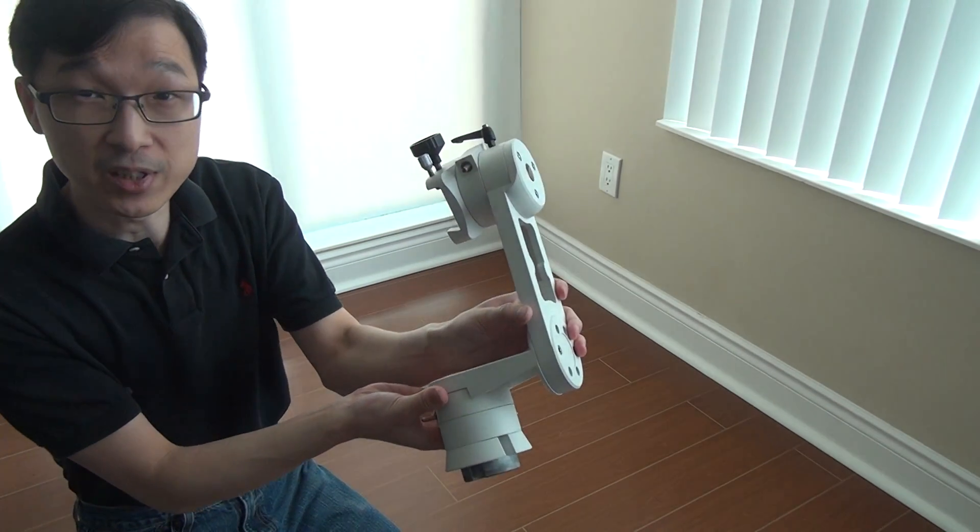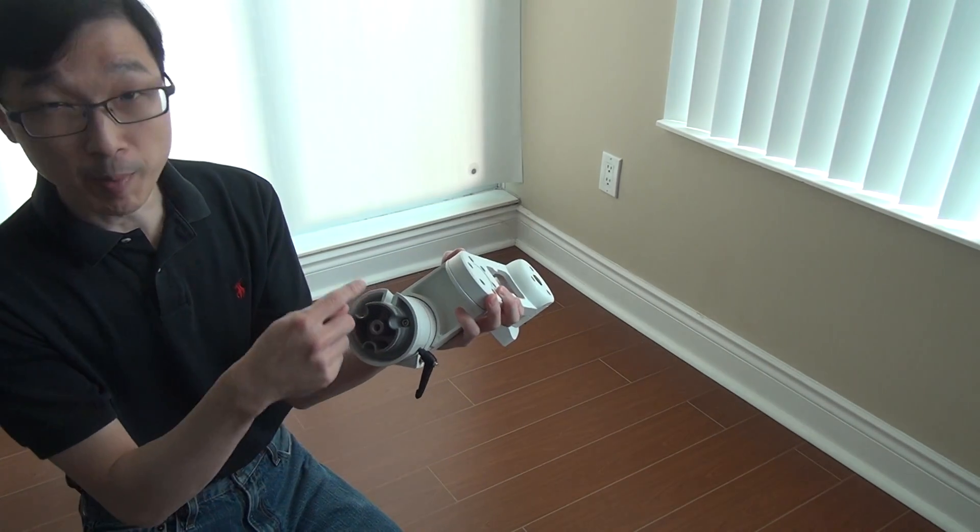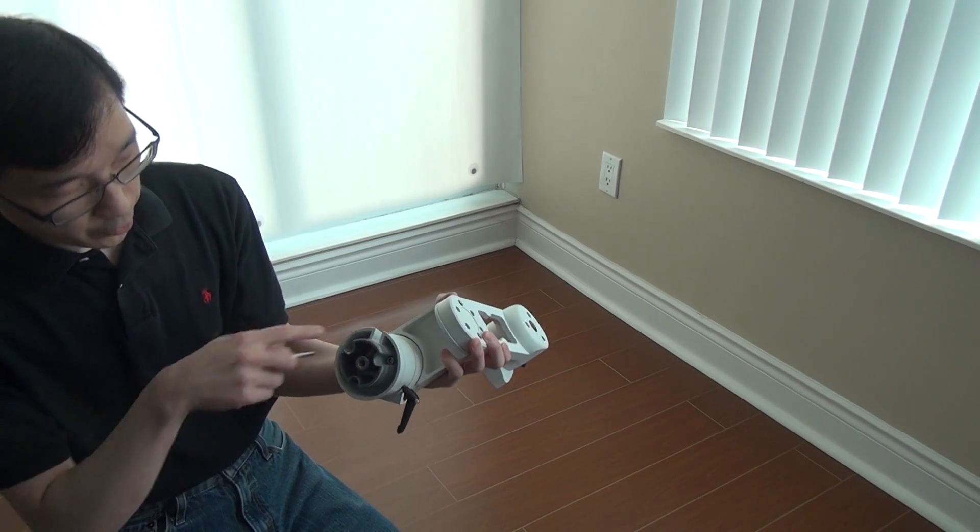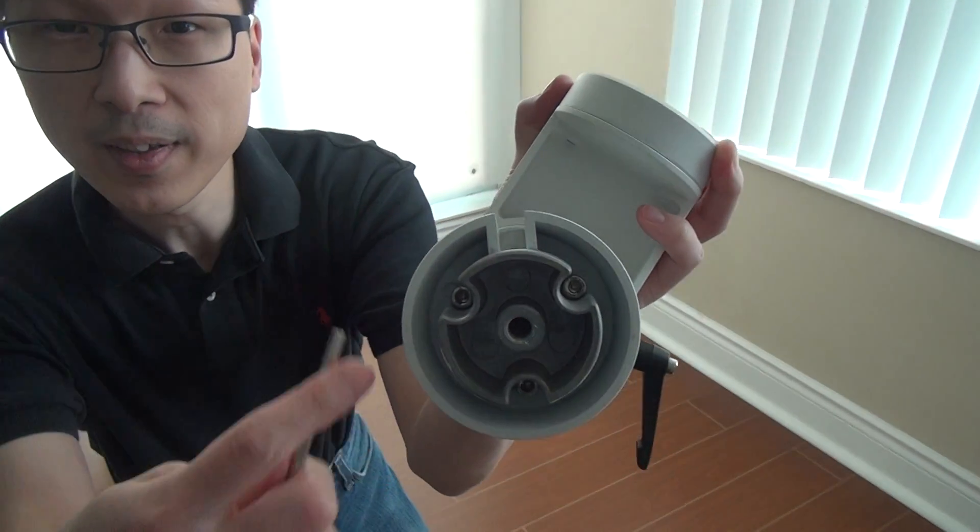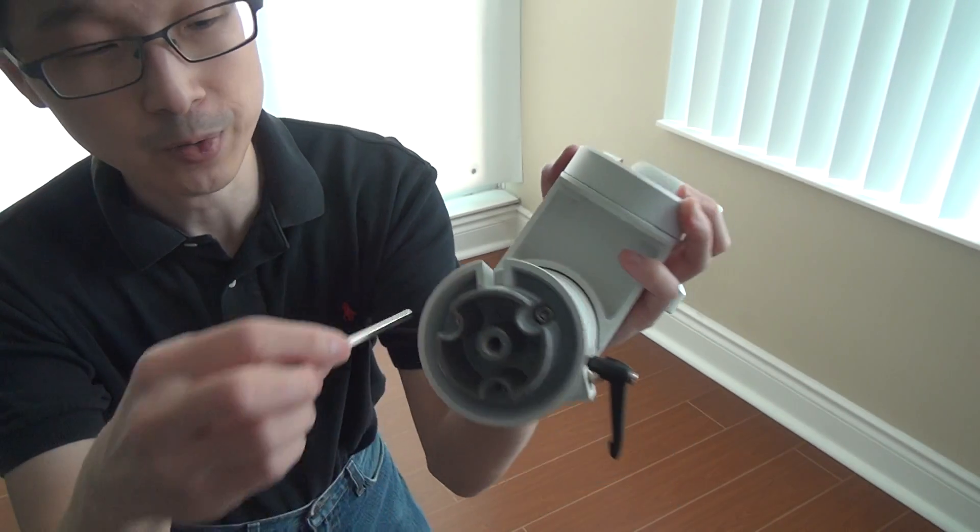So I've already removed the mount head as you can see. What you want to do is remove the bottom portion here. There are three screws. You can see the little positions here.